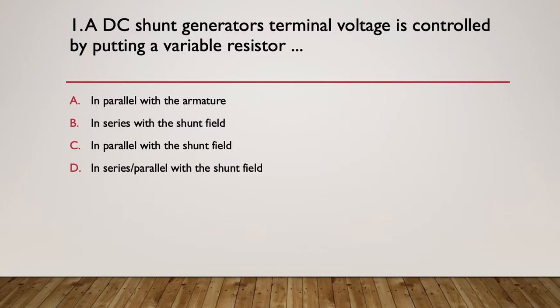A DC shunt generator's terminal voltage is controlled by putting a variable resistor where? A: In parallel with the armature. B: In series with the shunt field. C: In parallel with the shunt field. D: In series/parallel with the shunt field. Here's your hint: draw the circuit diagram of a shunt motor.